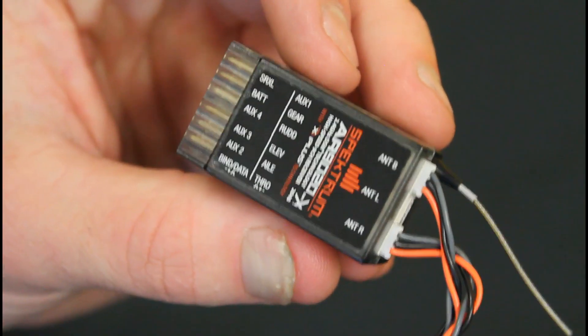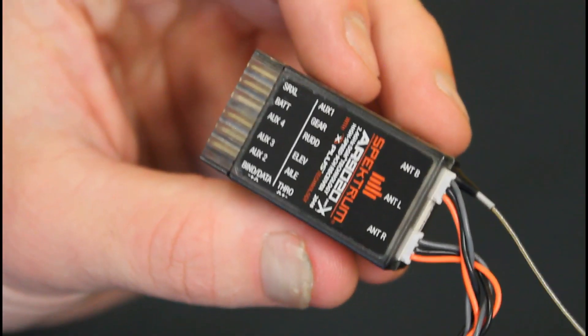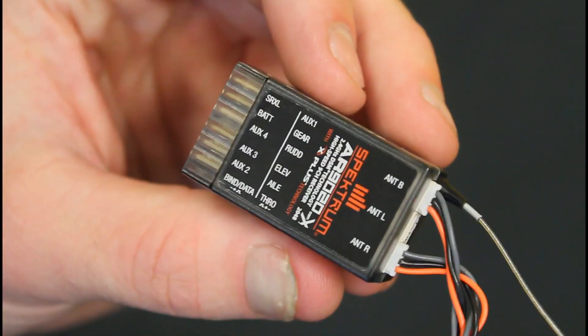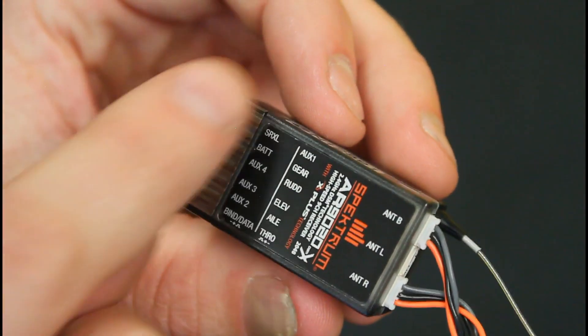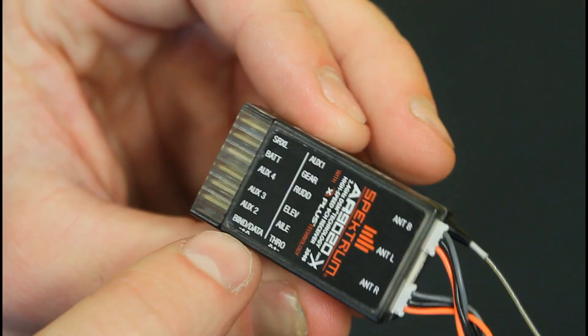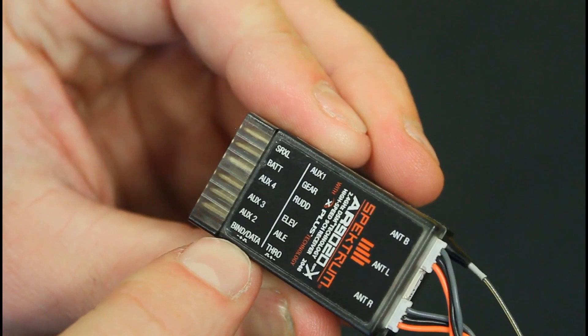Okay, the first thing we'll talk about, and this is the most common question we have, is where the bind and data port is on this receiver. Now, as you can see, there's the list of the servo allocations here. The one that we're looking at is the bind and data, which is in the bottom left-hand corner.